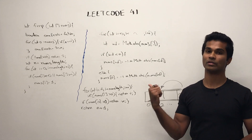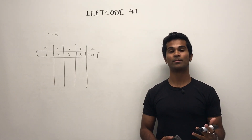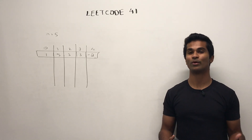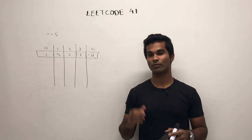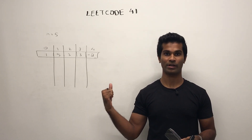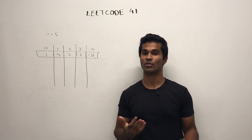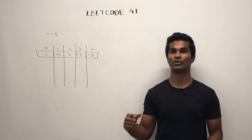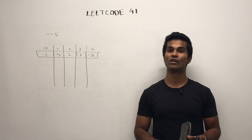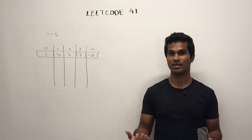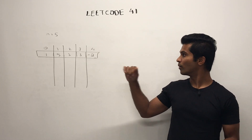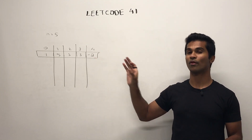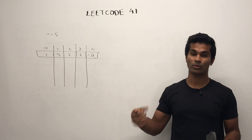So let's step through an example. I've written an array already. The first thing we do is see if the number 1 exists — it does, so we cannot return 1. Next we check: are there any numbers in here which are zero, negative, or larger than n where n is the length of the array? Well, we have negative 2, so we set it equal to 1.